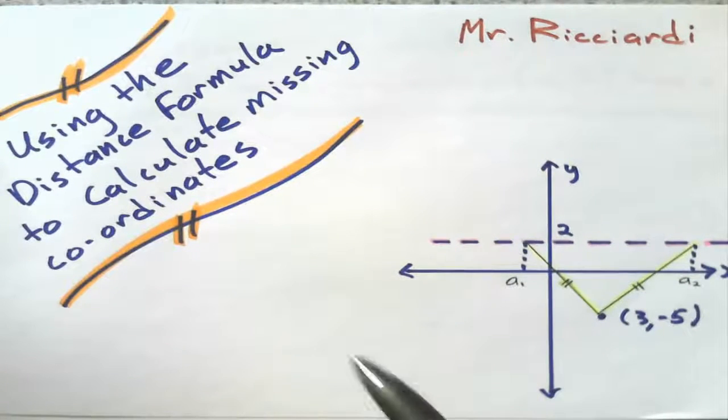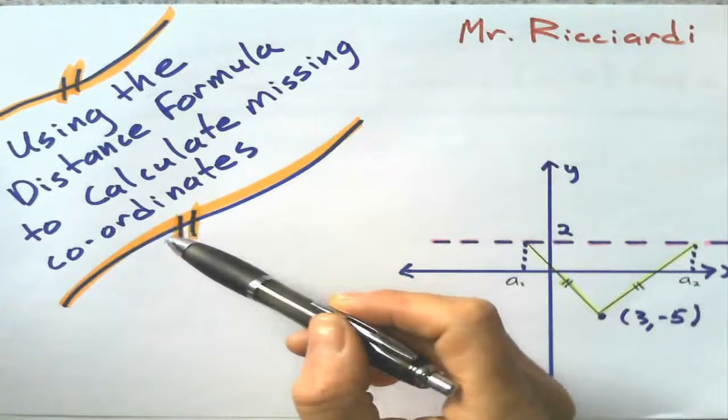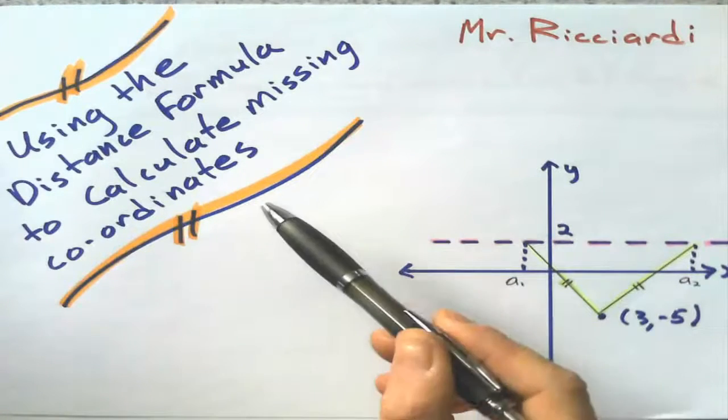Okay, here we go. So, we're going to practice using the distance formula, which we should know by now, to calculate a missing coordinate.